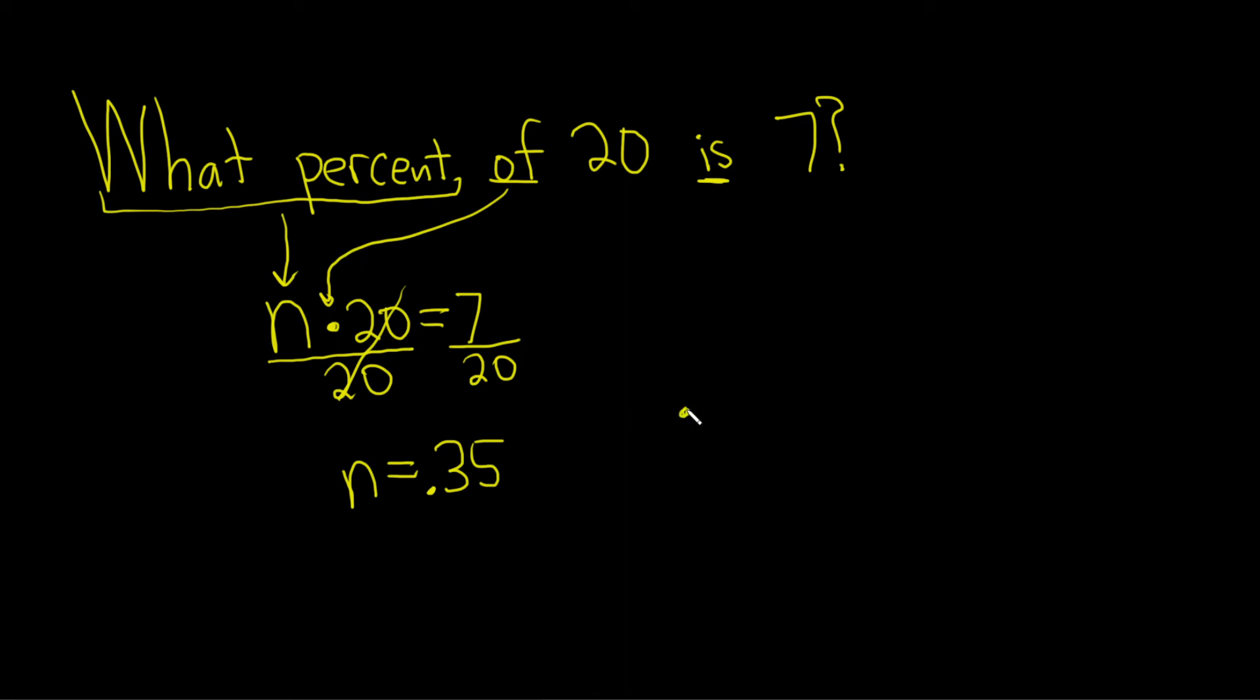So what we'll do now is we'll take the 0.35 and we'll turn it into a percent. To do that, you take this decimal and you just go right two places. One, two, boom, put a dot. And then you write it as 35%. So n is equal to 35%.